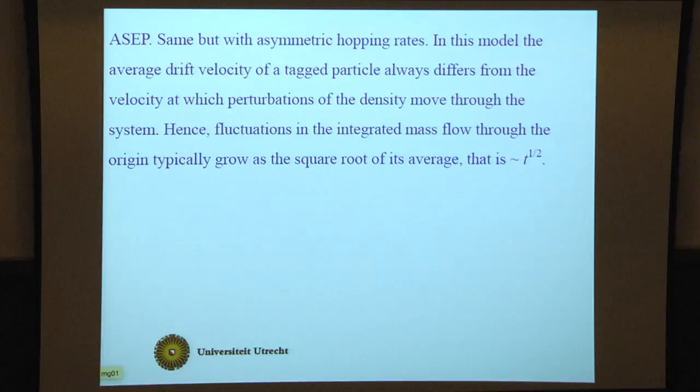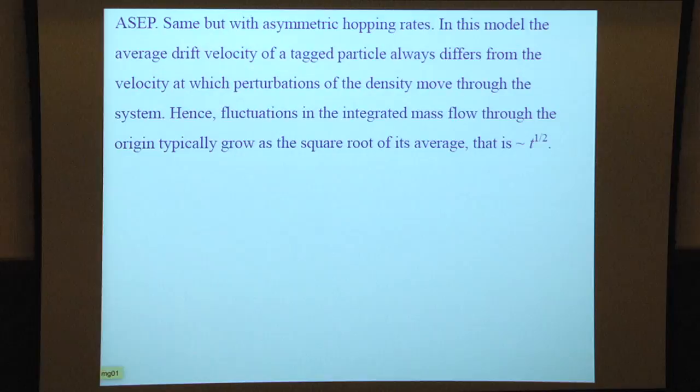For the ASEP, it's a similar model but the hopping rates are asymmetric. In this model the average drift velocity of a tagged particle always differs from the velocity at which perturbations of the density move through the system. So fluctuations in the integrated mass flow through the origin typically grow as the square root of its average, as the square root of t.